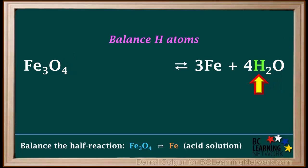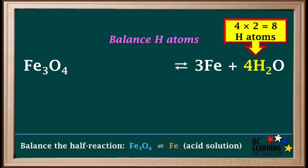Our next step is to balance hydrogen atoms. To find the total number of H atoms in 4H2O, we multiply hydrogen subscript 2 by the coefficient in front, which is 4. So, we have a total of 4 times 2 or 8 hydrogen atoms on the right side.